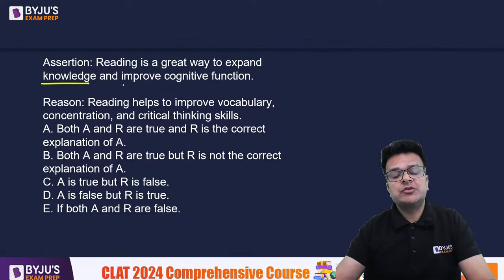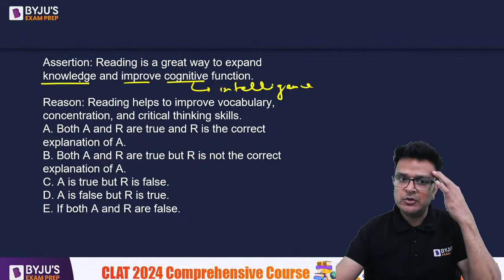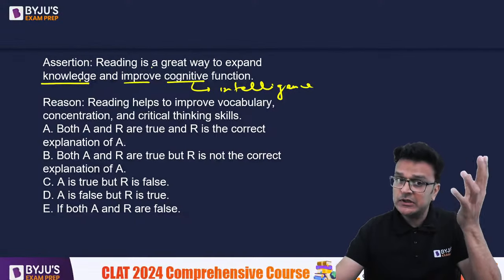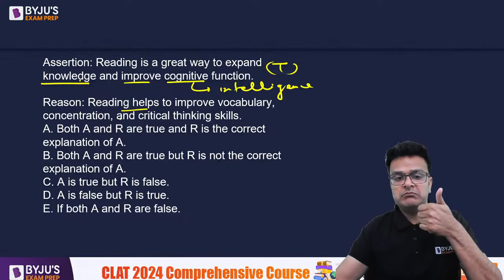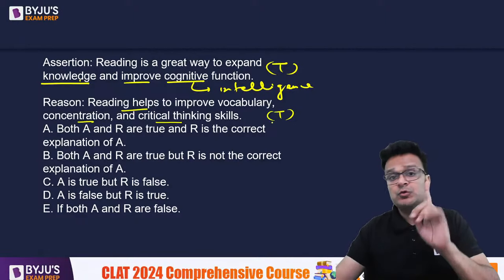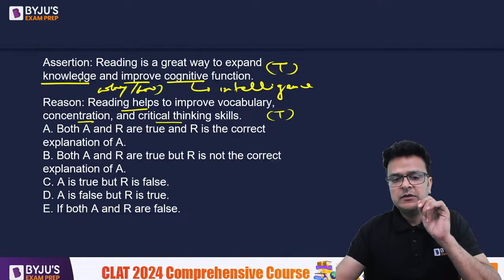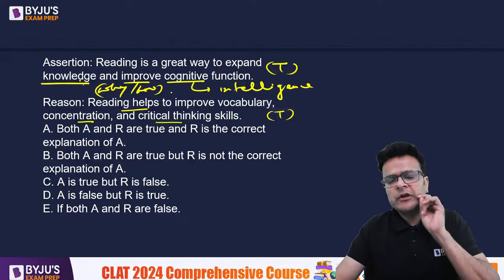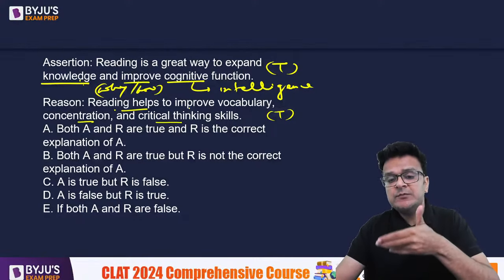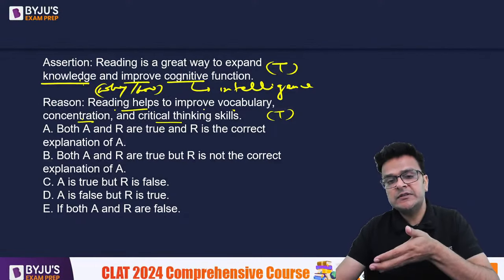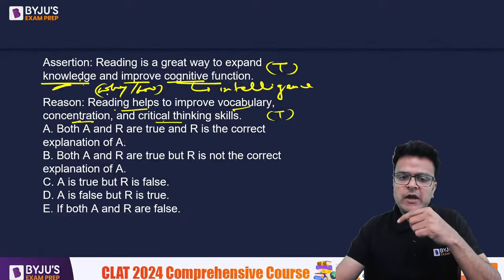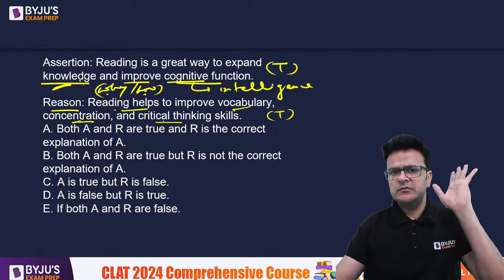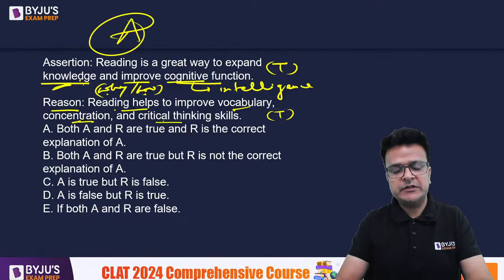Reading is a great way to expand knowledge and improve cognitive function — this is true. Reasoning: reading helps to improve vocabulary, concentration and critical thinking skills — also true. If you ask why reading improves cognitive function, the reason is perfect: improving vocabulary expands knowledge, and improving concentration and critical thinking skills improves cognitive function. So the answer is A, and most of you got it absolutely right.